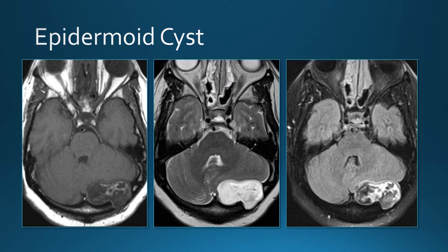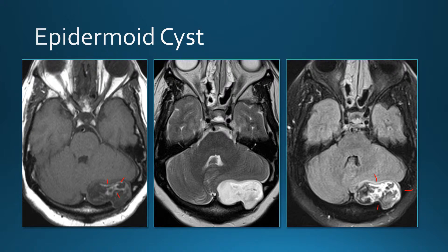This is the same lesion on MR. This one has some bright areas on T1 — most of the time they're dark on T1, but they can have some bright areas. A little bit heterogeneous on T2 and very heterogeneous on FLAIR. The key is the diffusion-weighted images — very bright on diffusion. On ADC they tend to be only iso-intense to brain, but on the regular diffusion-weighted images they're extremely bright.